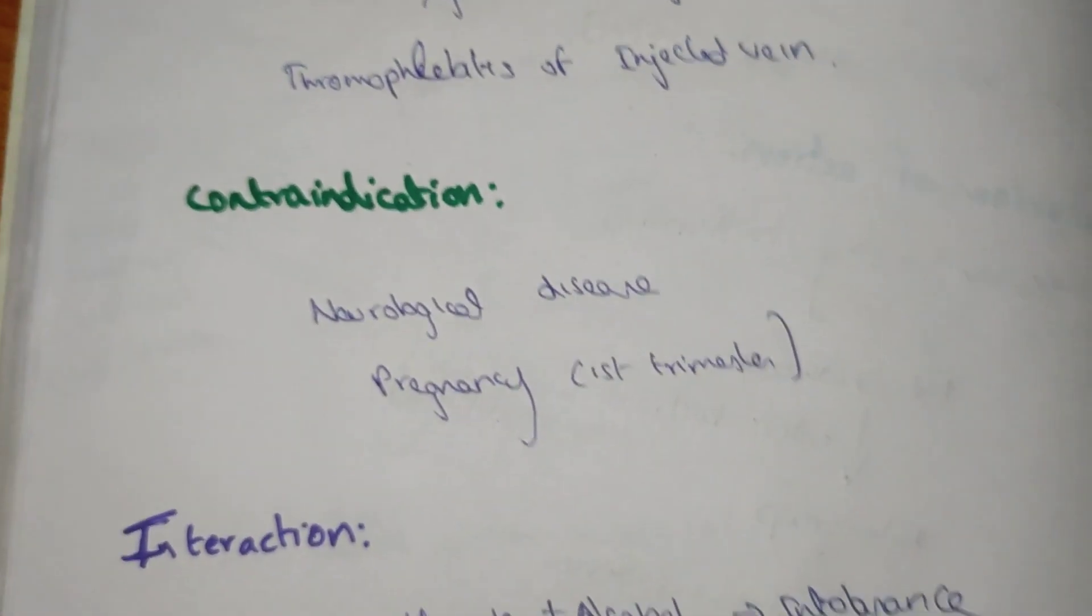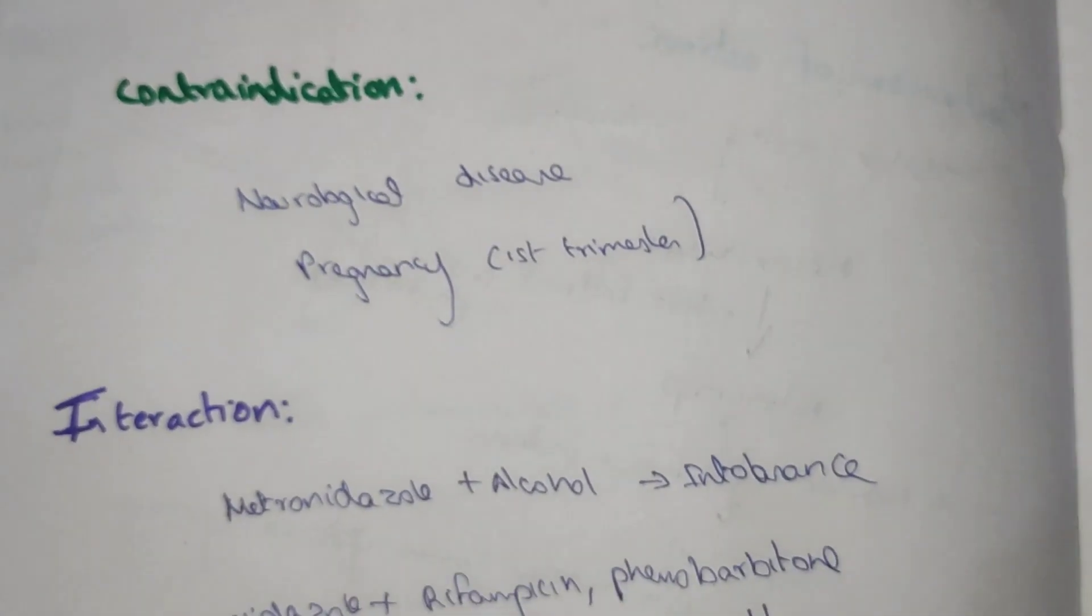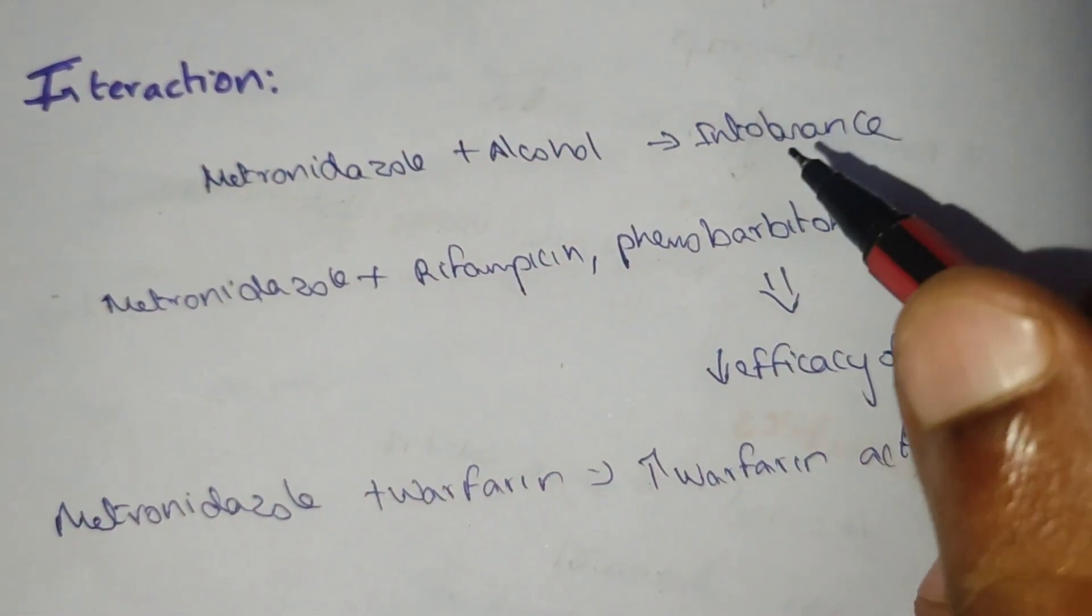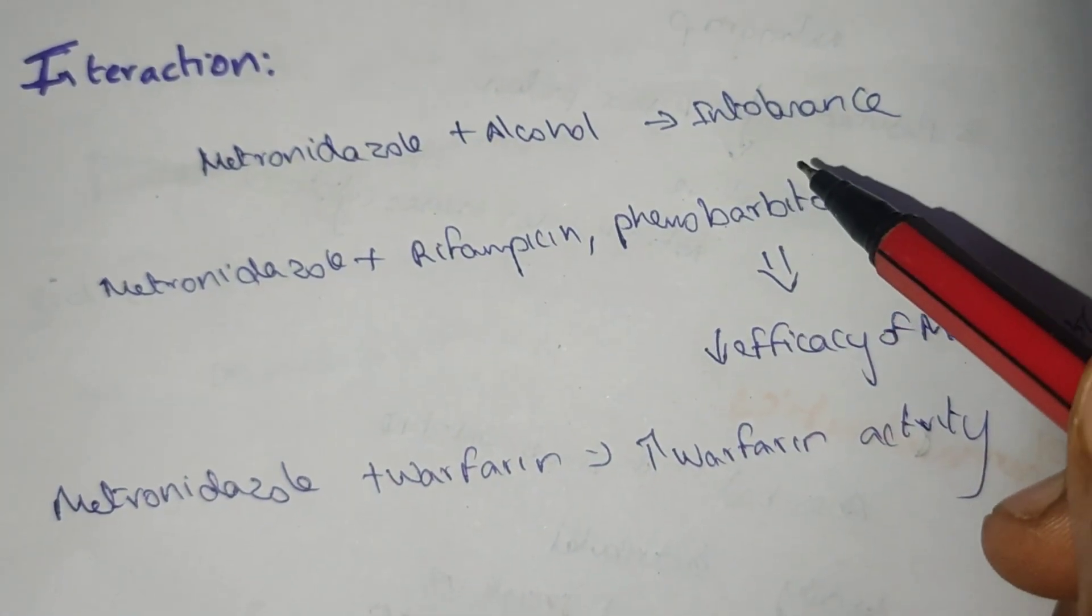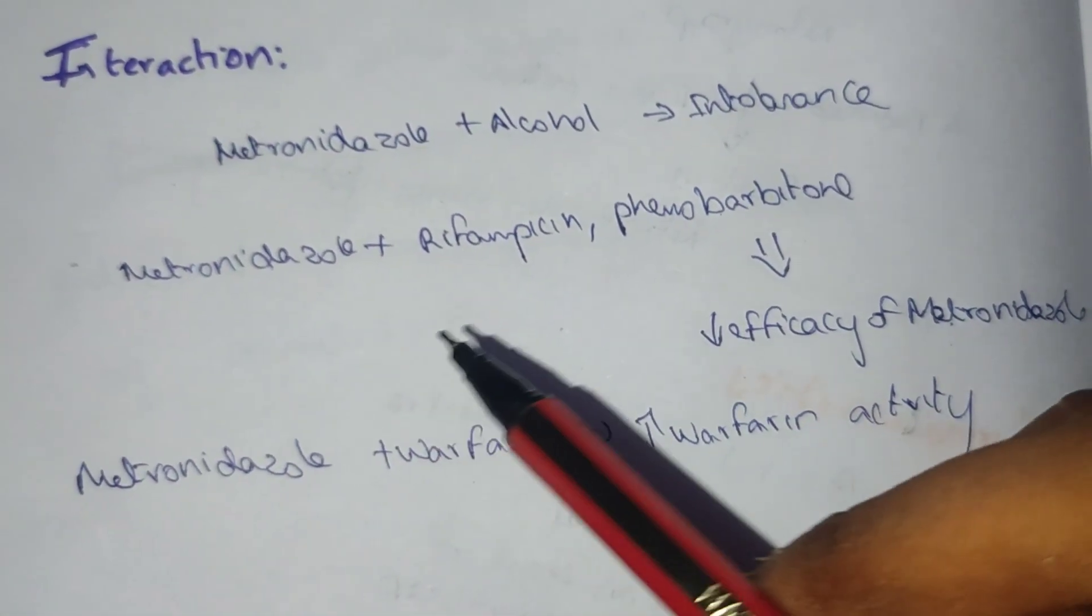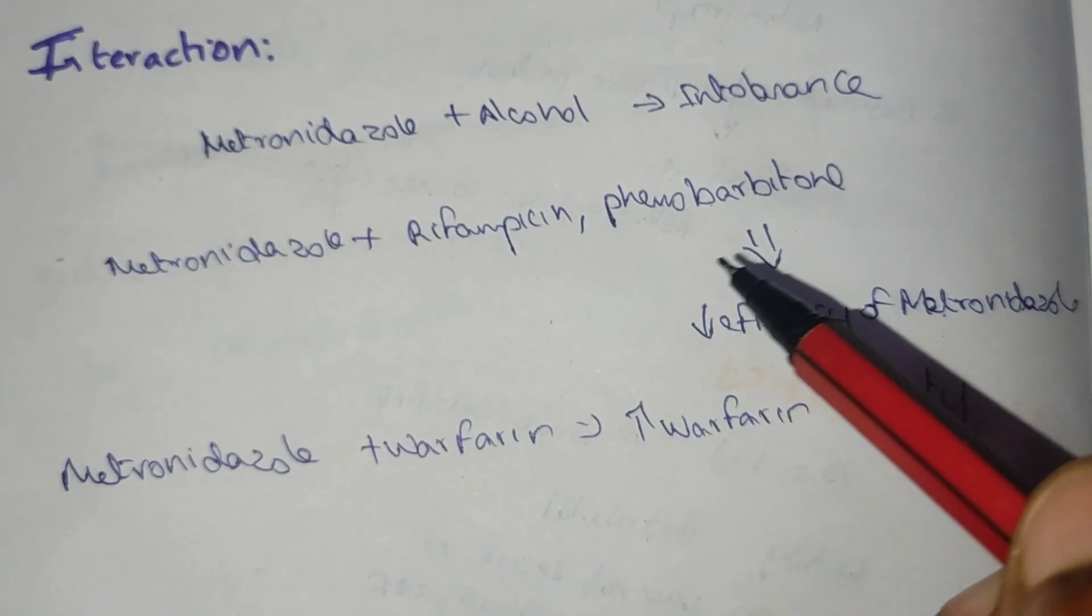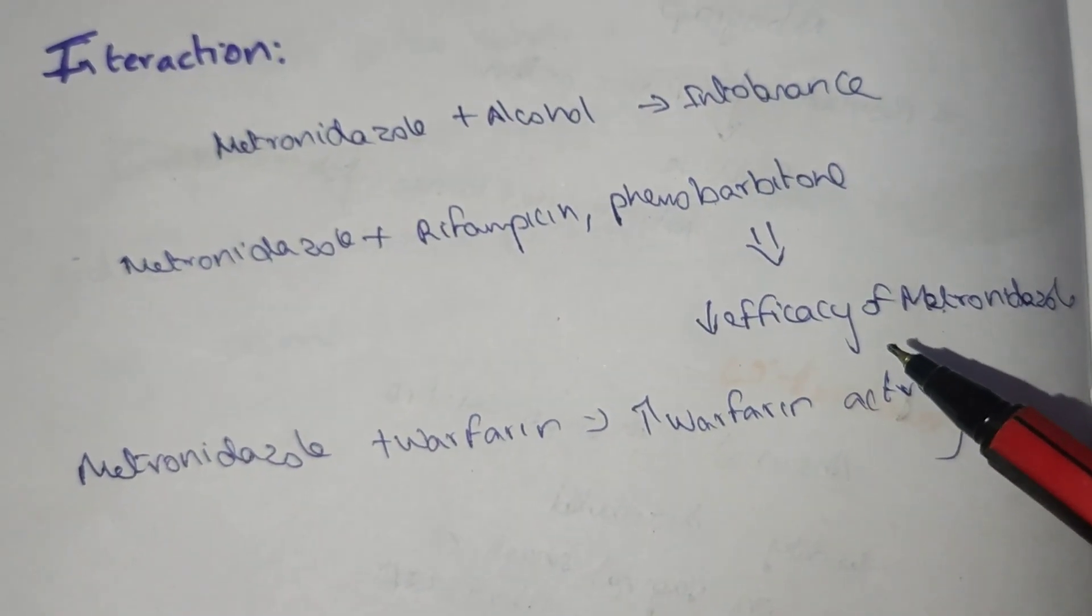Contraindications: these should not be used in neurological disease patients as well as pregnancy. The interactions are: metronidazole plus alcohol produces intolerance; metronidazole plus rifampicin and phenobarbital decreases the efficiency of metronidazole; metronidazole plus warfarin increases the activity of warfarin.